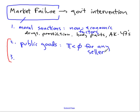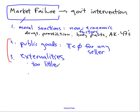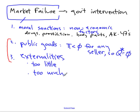The third case is interesting: the case of externalities. In the case of externalities, it's not all or nothing like public goods. In the case of public goods, private firms will not produce anything — the quantity we get of a public good is zero. If we want to have more than zero, the government has to provide it. In the case of externalities, private markets will produce goods that cause externalities, but will get either too little or too much. It's sort of a Goldilocks problem.